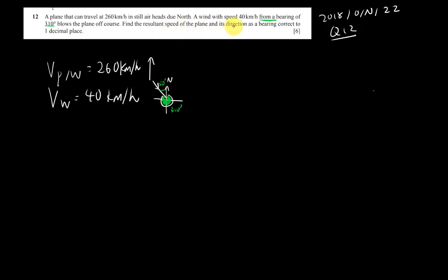The question asks me to find the resultant speed of the plane and its direction. So right now I will need to form a triangle. As I always do, we know the rule: velocity of the plane equals velocity of plane relative to wind plus velocity of the wind.